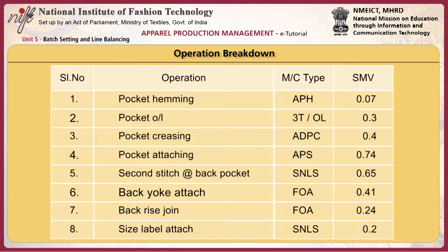Operation breakdown: the job must be broken down into operations of equal sizes. The operation breakdown includes element descriptions from method study, standard time for each operation, the type of machinery required, and any special work aids and attachments to be used. This table displays the operation breakdown for the back section of a pair of jeans.